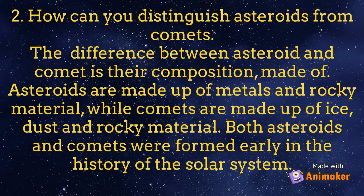Number 2: How can you distinguish asteroids from comets? The difference between an asteroid and a comet is their composition. Asteroids are made up of metals and rocky material, while comets are made up of ice, dust, and rocky material. Both asteroids and comets were formed early in the history of the solar system.